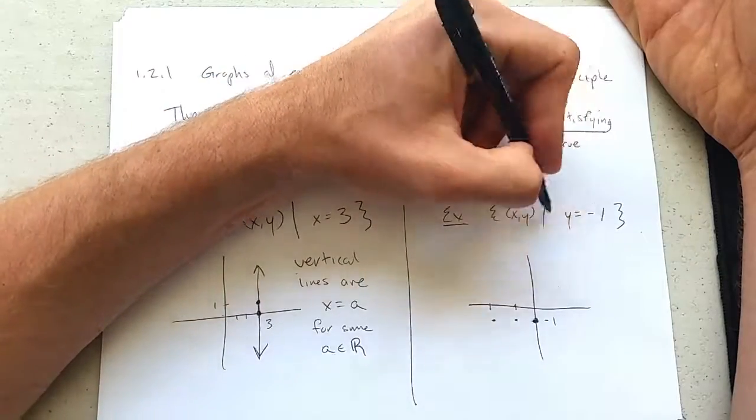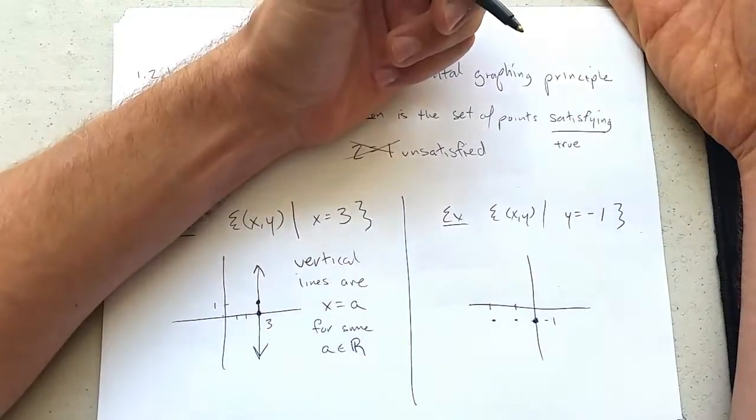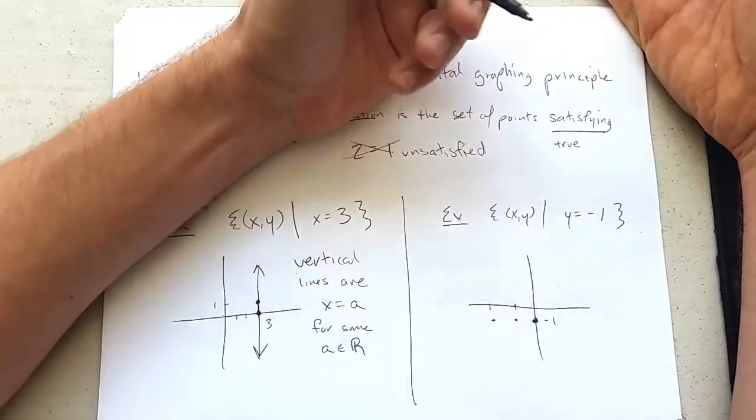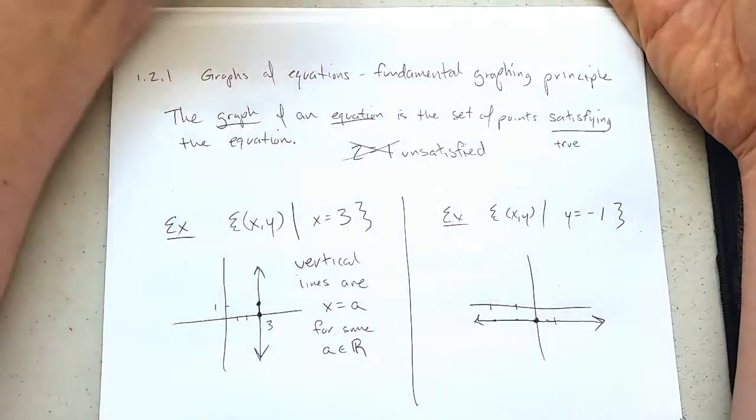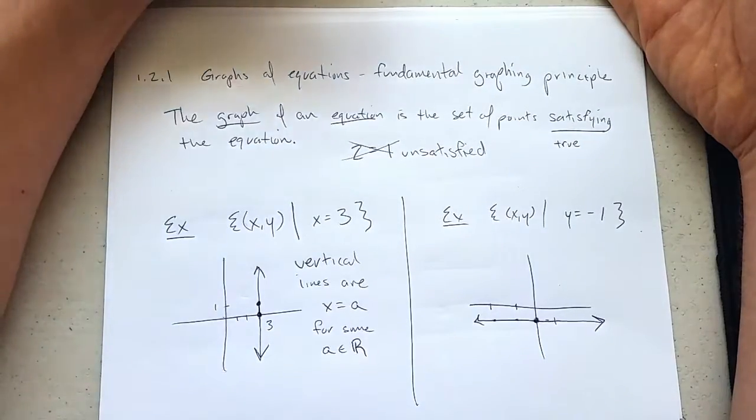But I don't care in the relation right here what their x-coordinates are. They could be anything. So all the points that have y-coordinate negative 1 are going to be graphed like this.